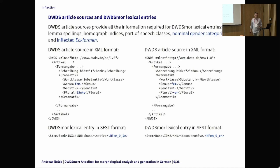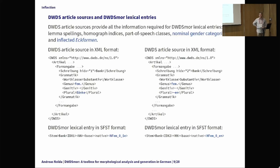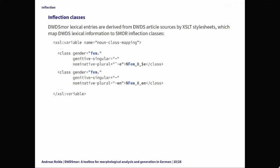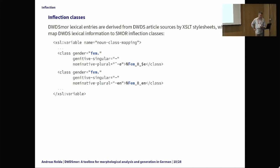All of this information can be used for deriving lexical entries in the SFST format, shown at the bottom of the page. We have the lemma, the homograph index, the part-of-speech class, and from the various grammatical information we can construct an S-Mor inflection class. The mapping between the dictionary sources and the lexical entries for DWDSmore is done in XSLT style sheets. In easy cases like these we can use a direct mapping from article source information to the S-Mor inflection classes.